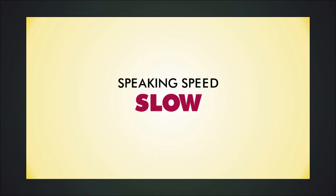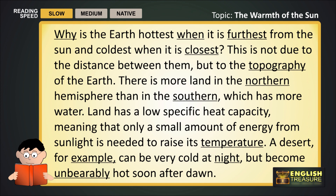We'll start by speaking slowly. Why is the earth hottest when it is furthest from the sun, and coldest when it is closest? This is not due to the distance between them, but to the topography of the earth. There is more land in the northern hemisphere than in the southern, which has more water. Land has a low specific heat capacity, meaning that only a small amount of energy from sunlight is needed to raise its temperature.